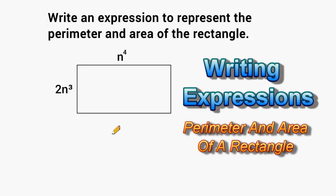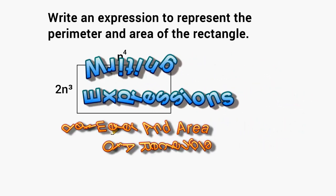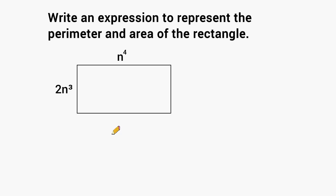Hey there, this is Mr. Masonette and what we're going to do in this tutorial today is we're going to write an expression to represent the perimeter and the area of two different rectangles. Notice with this rectangle, the length and the width are given as algebraic expressions, so we cannot actually figure out the perimeter and area — all we can do is write an expression that would represent them.